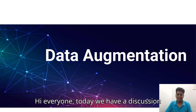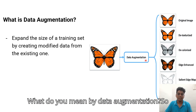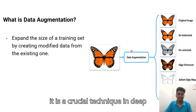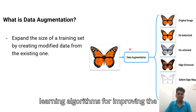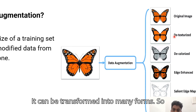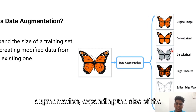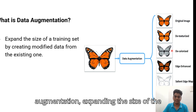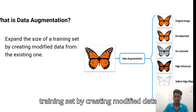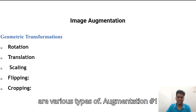Today we have a discussion about data augmentation techniques. Data augmentation is a crucial technique in deep learning algorithms for improving performance. The original image can be transformed into many forms. The purpose of data augmentation is expanding the size of the training set by creating modified data from the already existing one.